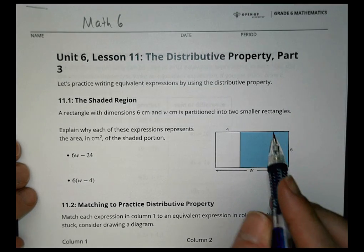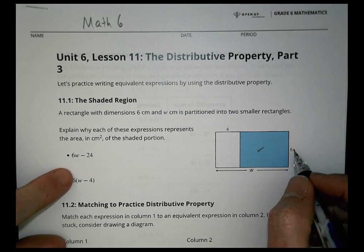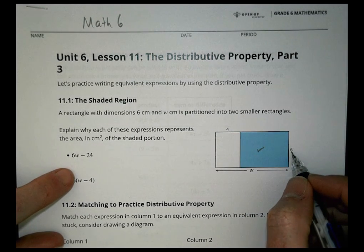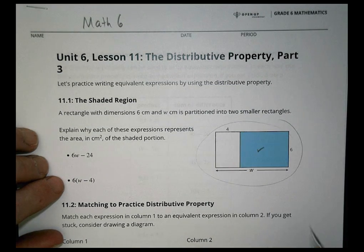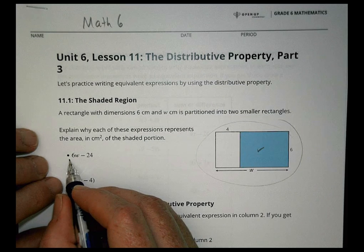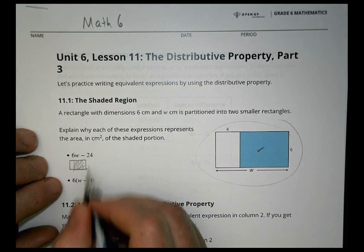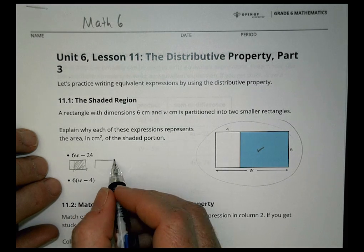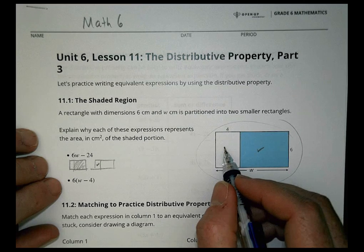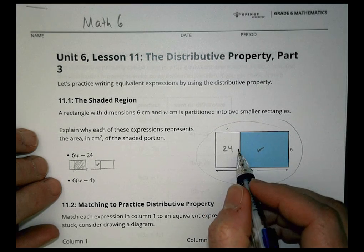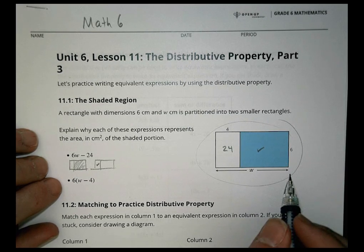Explain why each of the expressions represents the area of the shaded portion. We're looking at the shaded portion here. First, the whole thing is definitely 6 times w. That's the whole large rectangle. And what they're subtracting, 24, is that part. 6 times 4 is 24. So the whole thing minus the 24 gives you the shaded part.